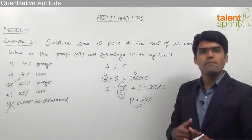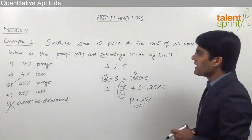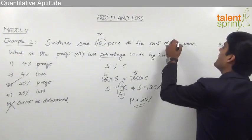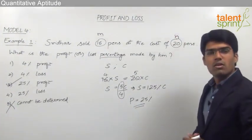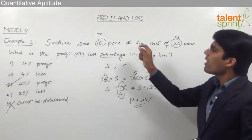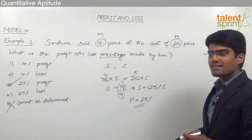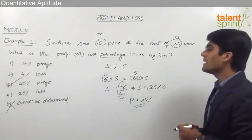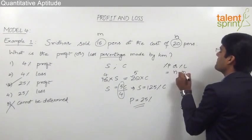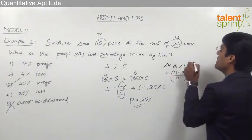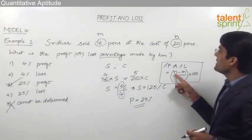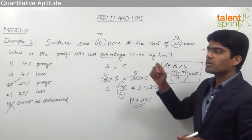This question can also be solved with a shortcut formula. Assume Sridhar sold M pens at the cost of N pens. If M articles are sold at the cost of N articles, then the profit or loss percentage is calculated as: (N − M) / M × 100, where N is the quantity associated with the cost price and M is the quantity associated with the selling price.